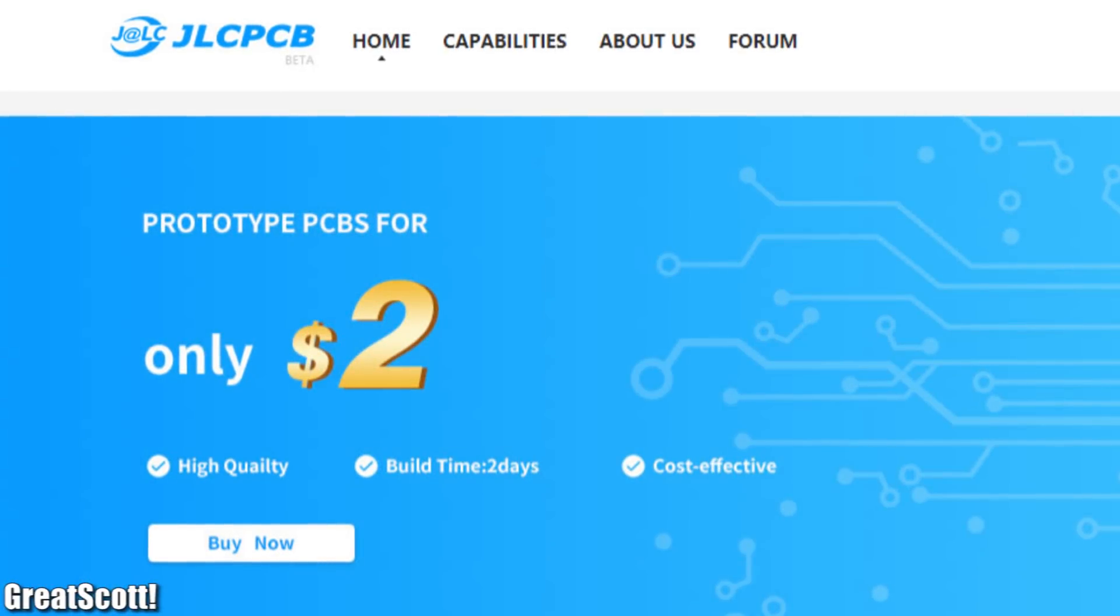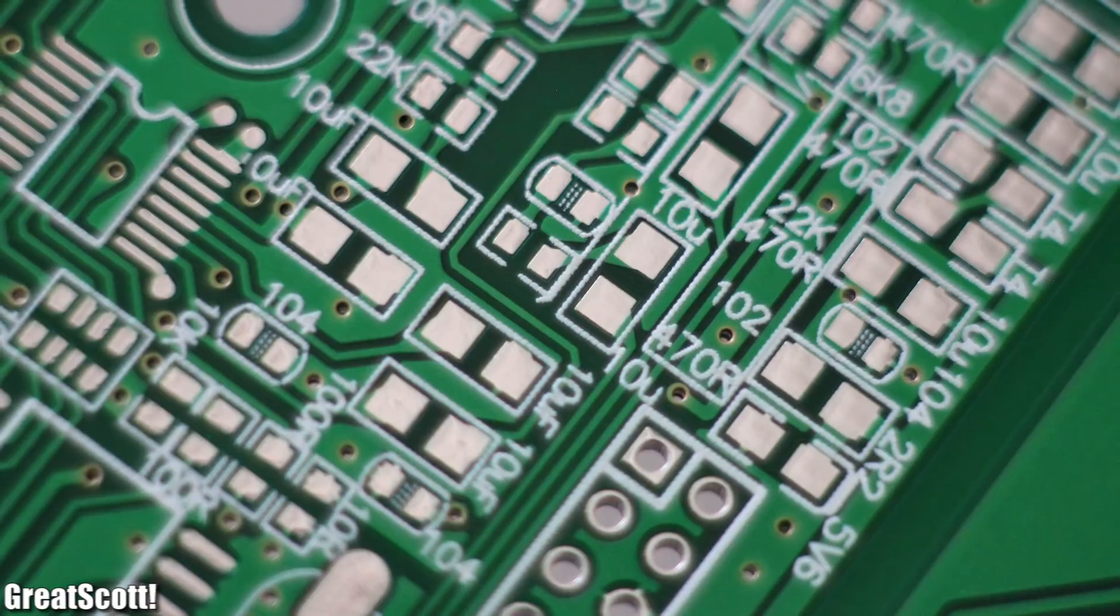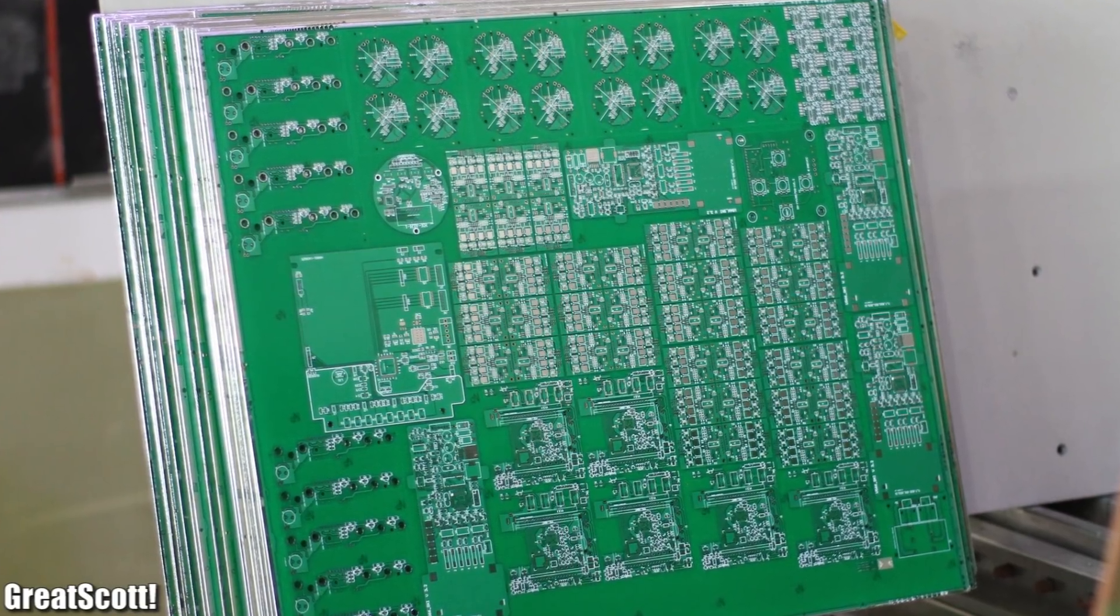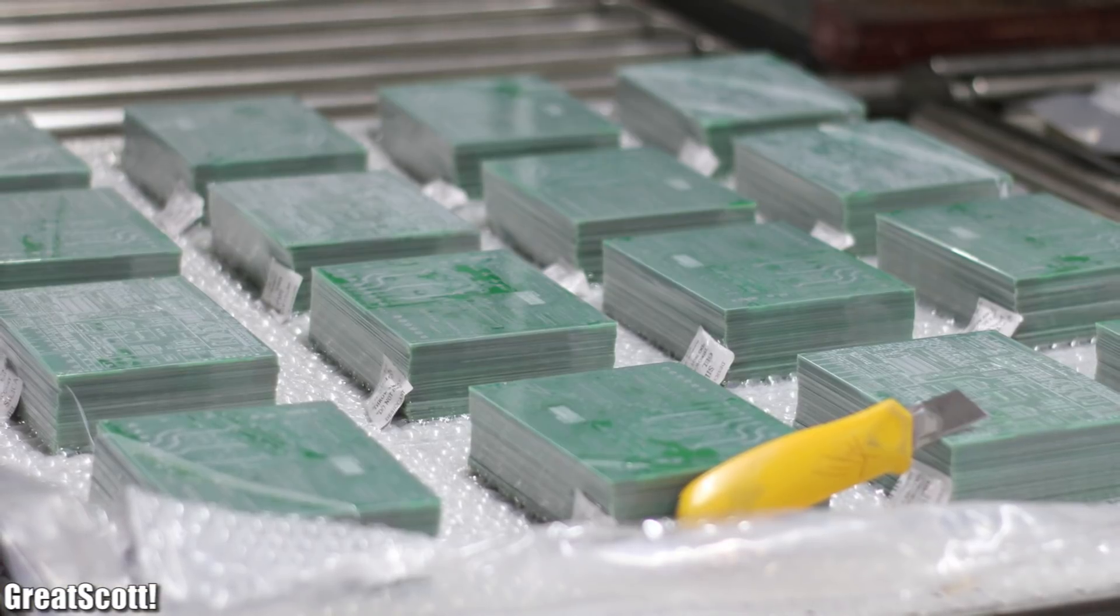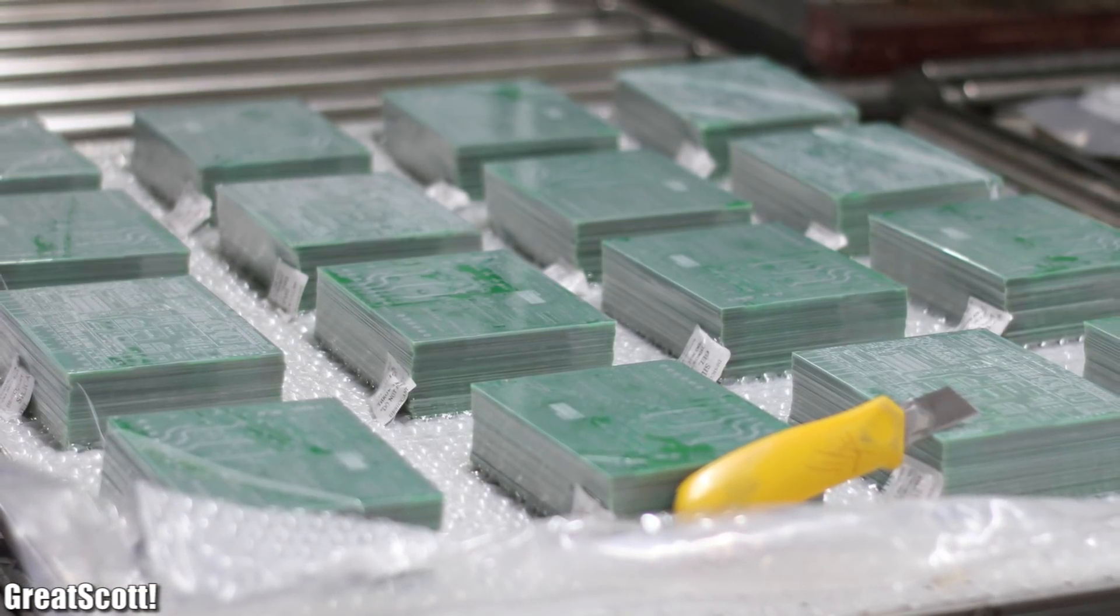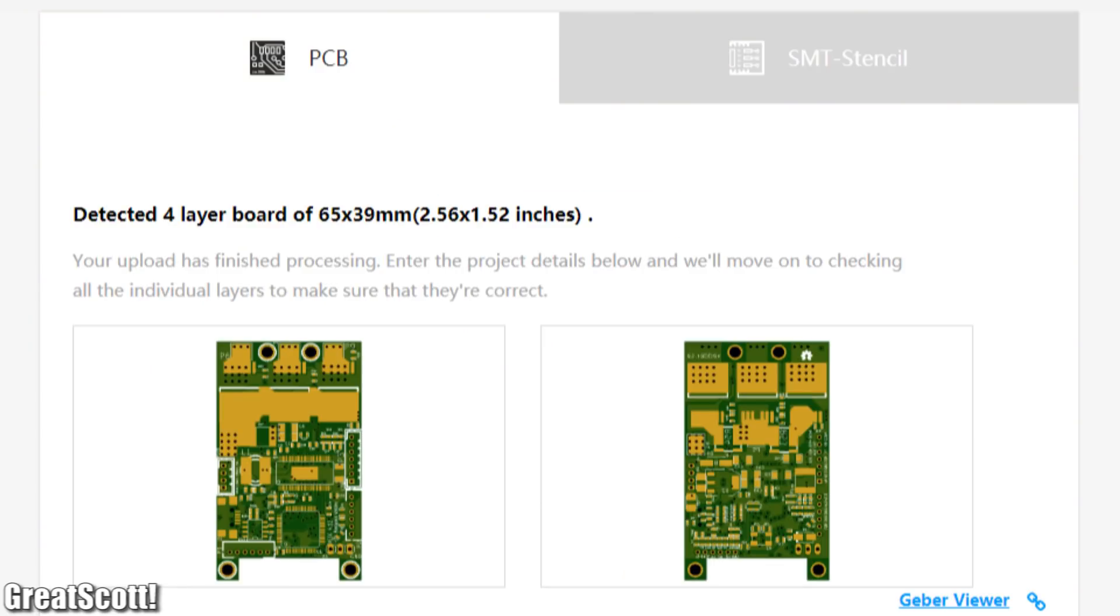This video is sponsored by JLCPCB. One fact about them: JLCPCB focuses on rapid prototypes of one to six layer PCBs, and all of them are shipped directly from their factories after being produced. Upload your gerber files to test the fast speed of prototype production and delivery.